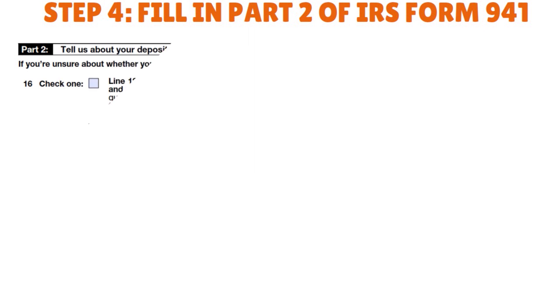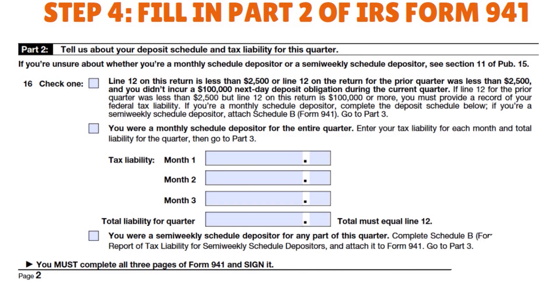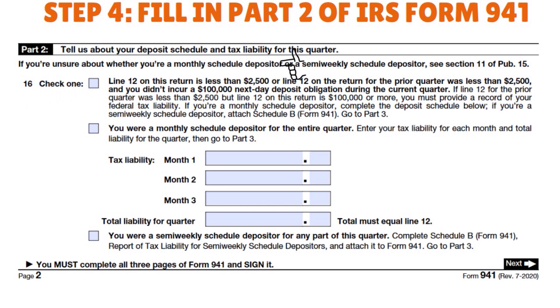Step four: fill in Part 2 of Form 941. Here you tell the IRS about your deposit schedule and tax liability for the quarter. In line 16, you indicate whether you are a monthly scheduled depositor for the entire quarter or a semi-weekly scheduled depositor for any part of the quarter.